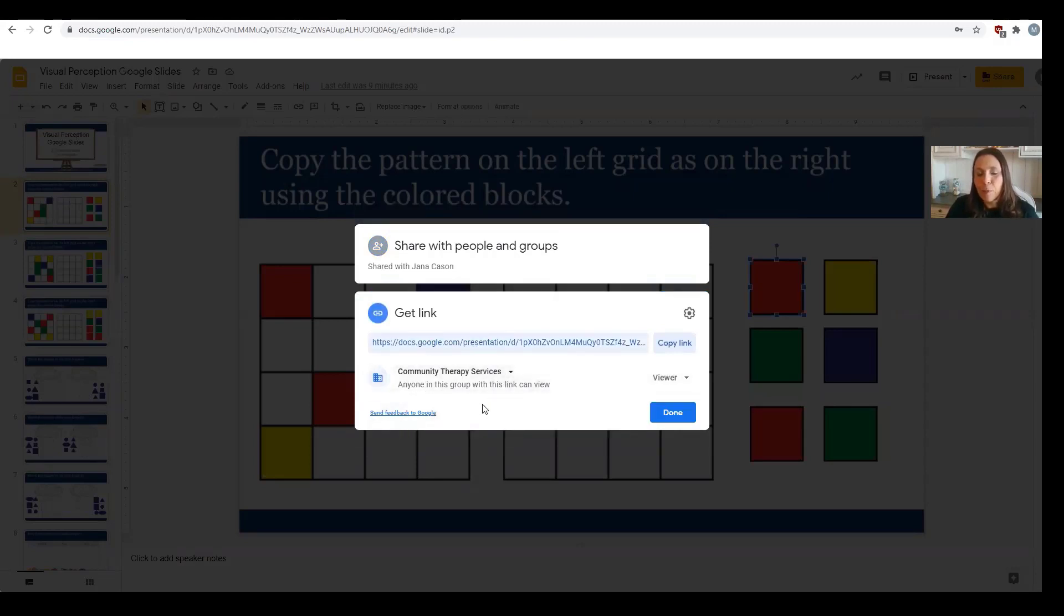Right now it says the name of Community Therapy Services, which is one of my companies where we provide occupational therapy telehealth services. And so I don't want just those with Community Therapy Services extensions in their email to get access to this. So we're going to change this to Anyone with the Link Can View.